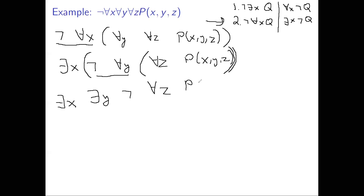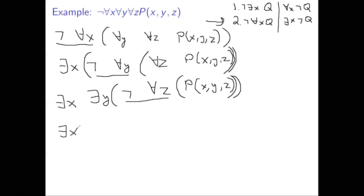I'll put parentheses to indicate we're done with exists-x and exists-y, since both have no negations. We do have a negation in front of for-all-z. Using rule two again, not-for-all-z becomes exists-z not. So we write: exists-x, exists-y, exists-z, not P(x,y,z). That's it — simplified, with none of the quantifiers having any negations in front of them.